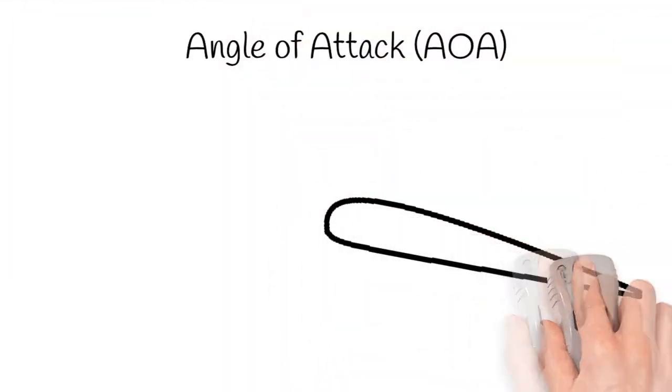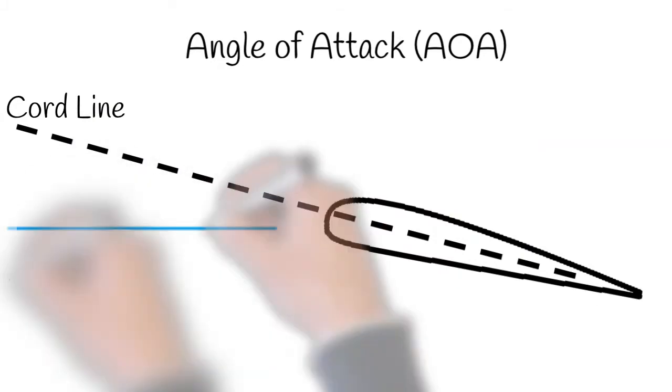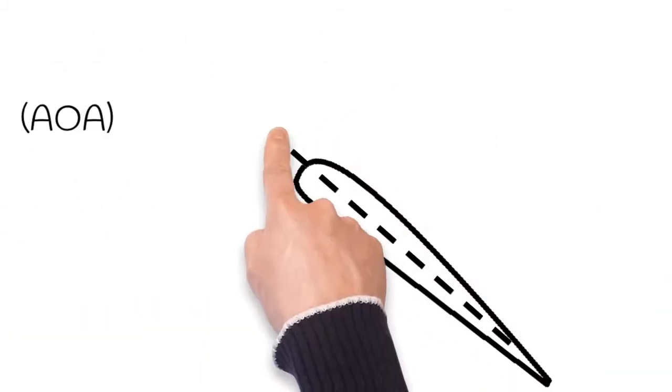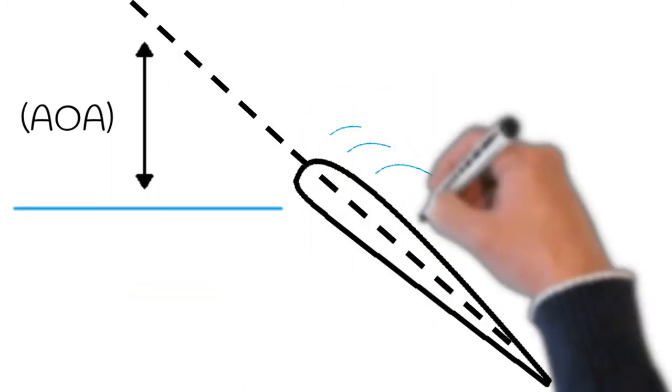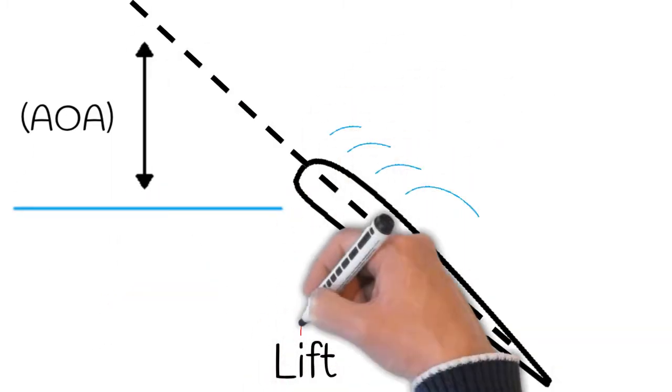Angle of attack, or AOA, is the angle between the airfoil cord line and the resultant relative wind. When the AOA is increased, air flowing over the airfoil is diverted over a greater distance, resulting in an increase of air velocity and more lift.